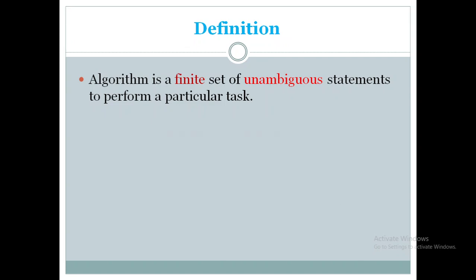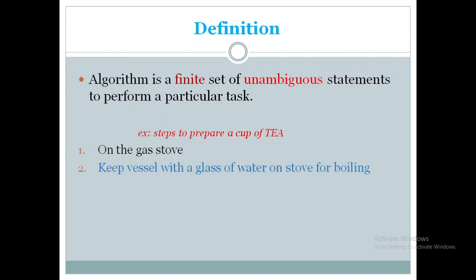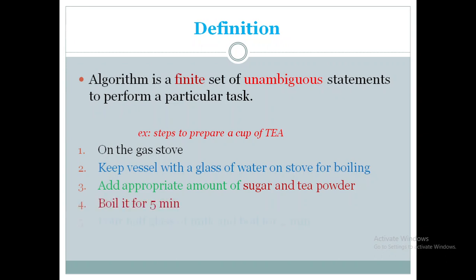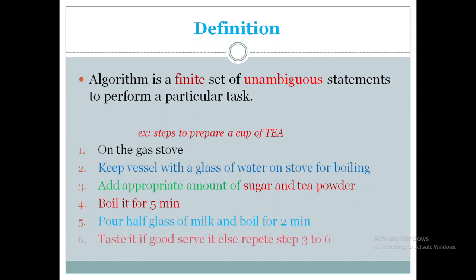Let us take a general example to understand how to prepare a cup of tea. Step 1: Turn on the gas stove — without starting it, you cannot prepare tea. Step 2: Keep a vessel with a glass of water on the stove for boiling. Step 3: Add an appropriate amount of sugar and tea powder. Step 4: Boil it for 5 minutes. Step 5: Pour half a glass of milk and boil for another 2 minutes. Last step: Taste it — if it is good, serve it; otherwise repeat steps 3 to 6. This is what we call an algorithm.